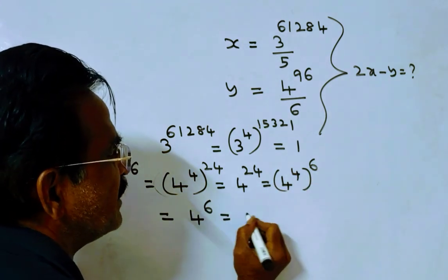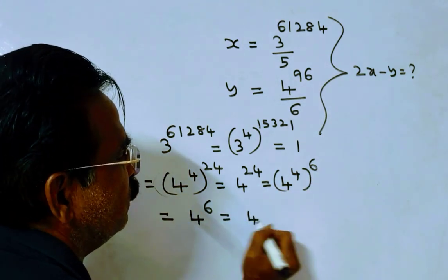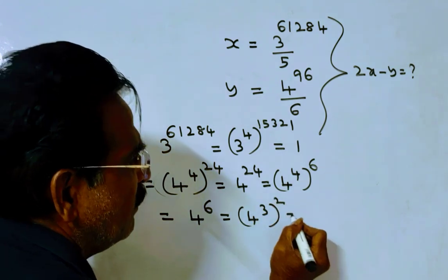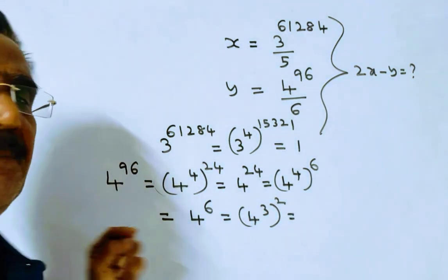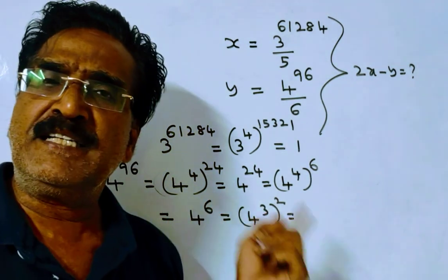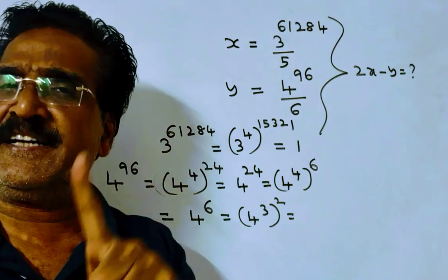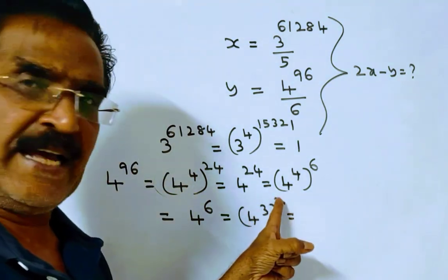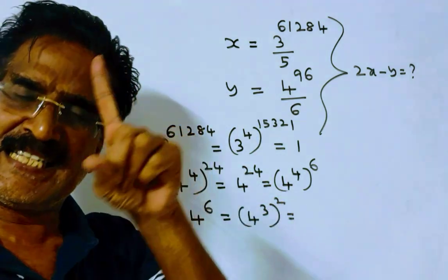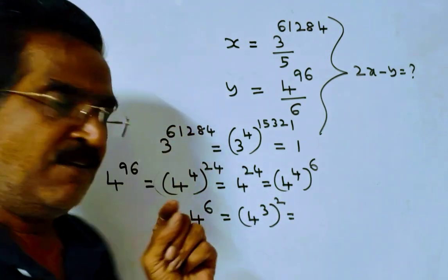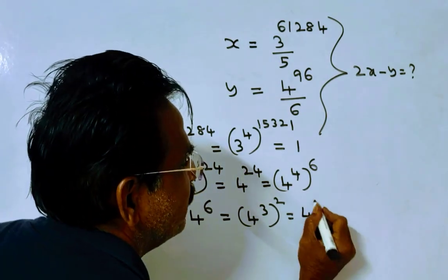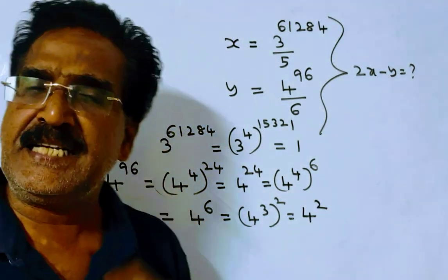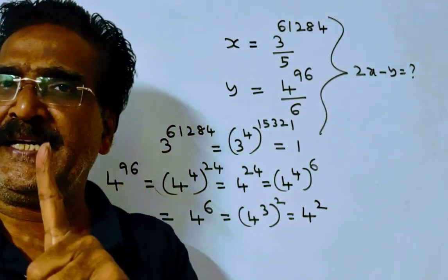Friends, 4 power 6 is equal to 4 cube, whole square. 4 cube means 64. When 64 is divided by 6, the remainder is 4. 4 square is 16. When 16 is divided by 6, the remainder is 4.